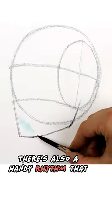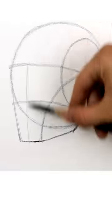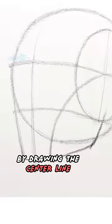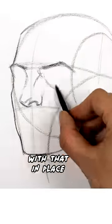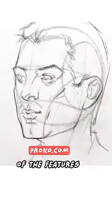There's also a handy rhythm that goes from the ear down to the chin. We can finish up the structure by drawing the center line. With that in place, it's easier to add in all the details of the features.